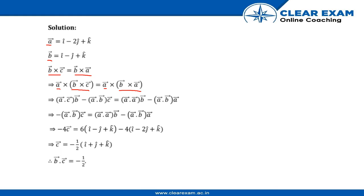Using the vector triple product formula, the left side expands to (a dot c)b minus (a dot b)c. The right side gives (a dot a)b minus (a dot b)a. Since a dot c equals zero as given in the question, the first term becomes zero, leaving minus (a dot b)c equal to the right-hand side.